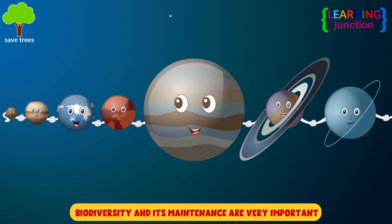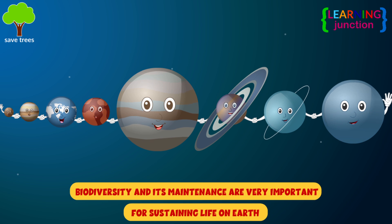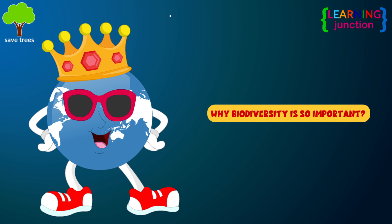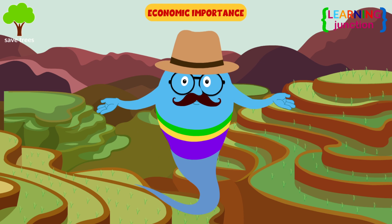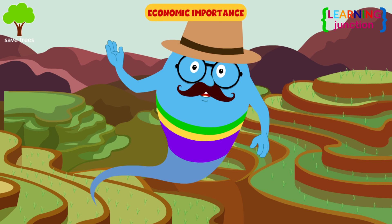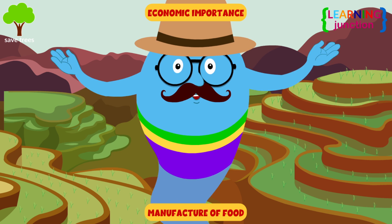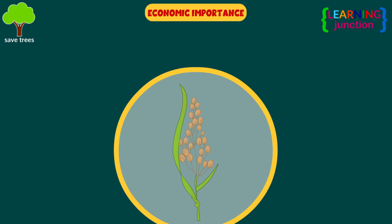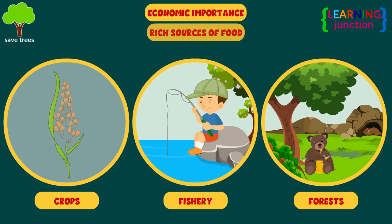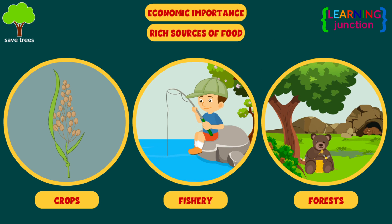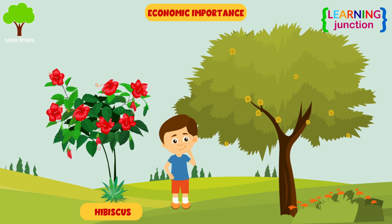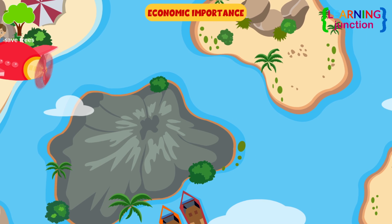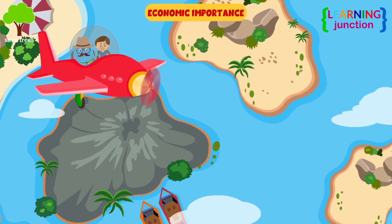Biodiversity and its maintenance are very important for sustaining life on Earth. Let's see why biodiversity is so important. Economic importance: biodiversity is a reservoir of resources for the manufacture of food, pharmaceuticals, and cosmetic products. Crops, fisheries, and forests are rich sources of food. Plants such as hibiscus and nilotica are used for medicinal purposes. The national parks and sanctuaries are a source of tourism.